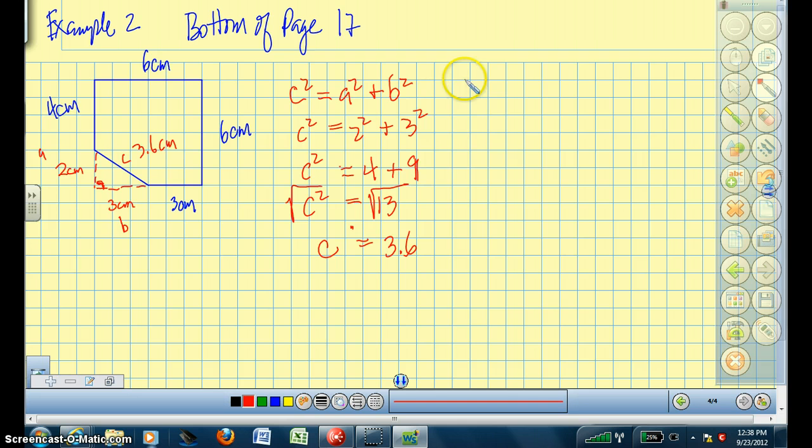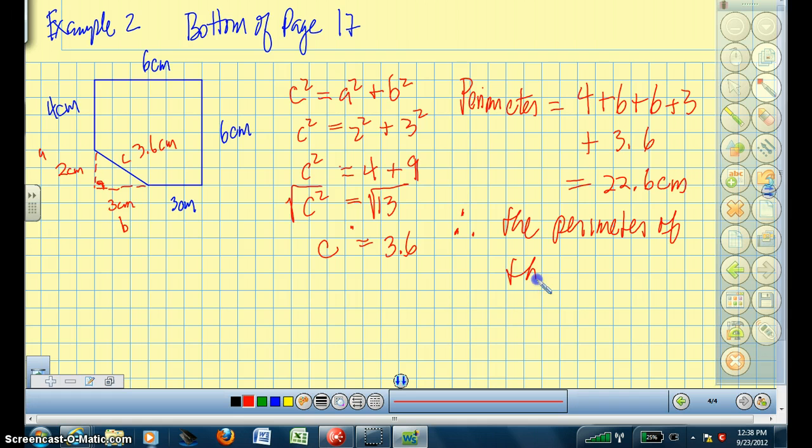Now I can actually find the perimeter. Therefore, the perimeter is 4 cm + 6 cm + 6 cm + 3 cm + 3.6 cm. And the total we get 10, 16, 19, 22.6 centimeters. And then again, let's have a concluding statement. Therefore, the perimeter of this shape is 22.6 centimeters.